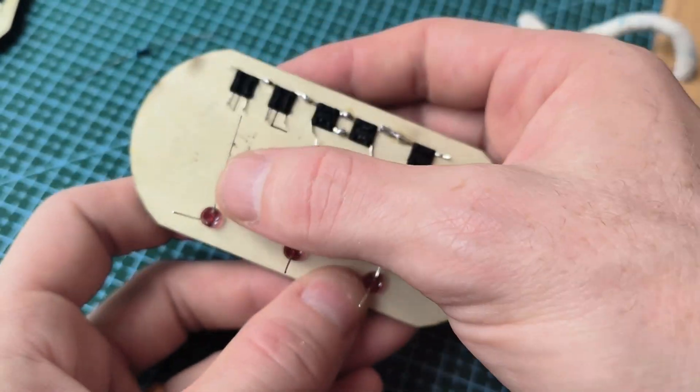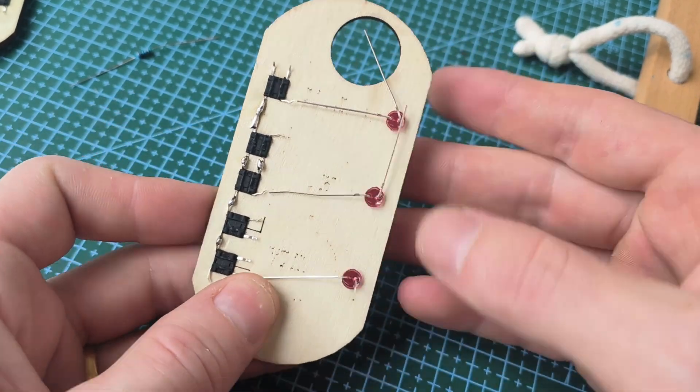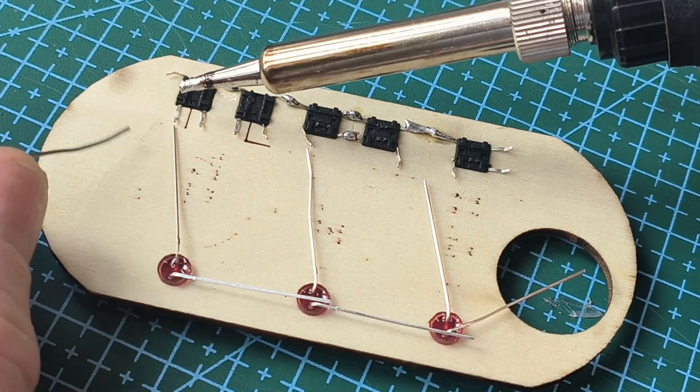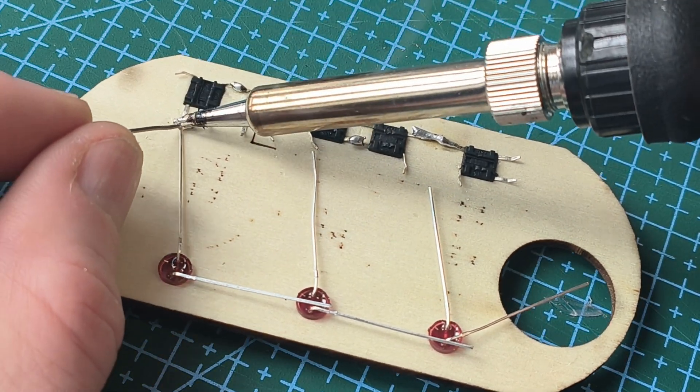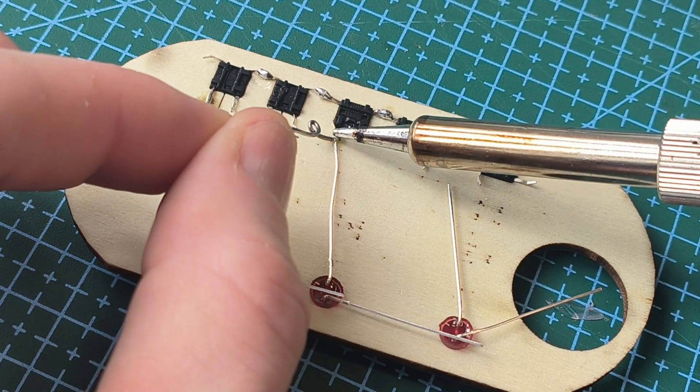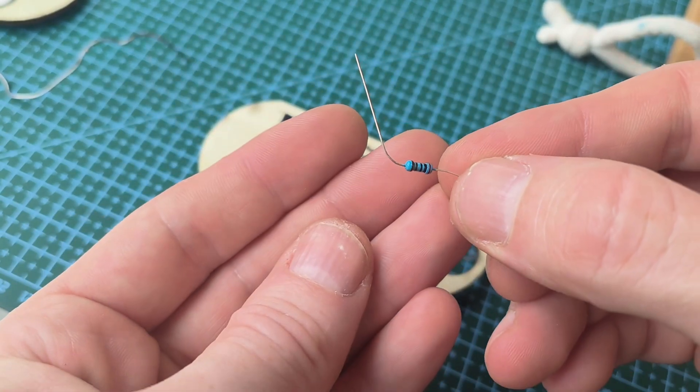Just bend up the anodes up to the buttons and then the cathodes we're going to go to the push button. Just putting a little bit of solder on these locations here because each of those will represent our gate.